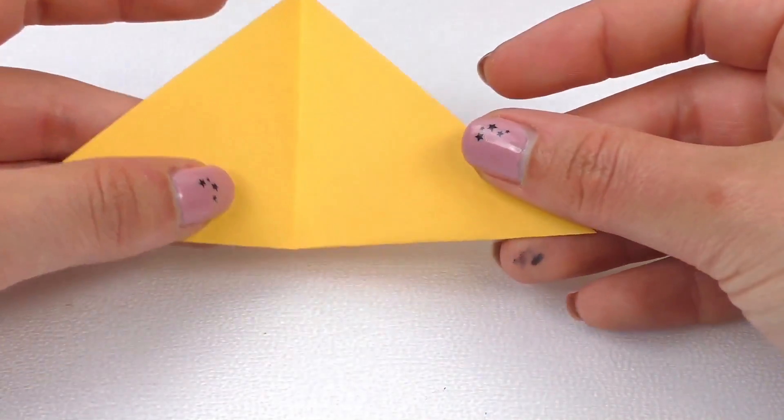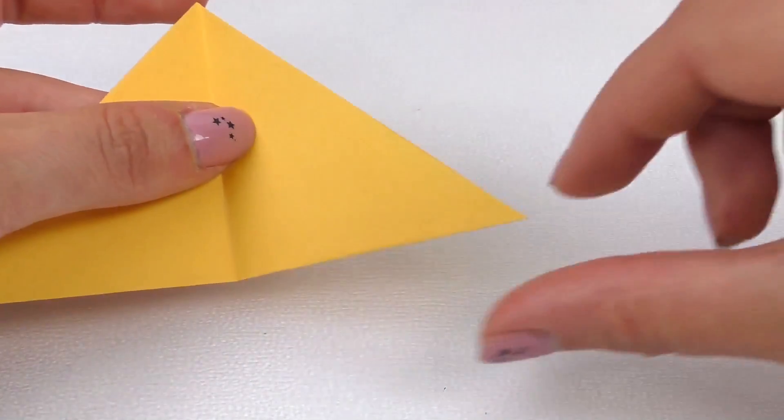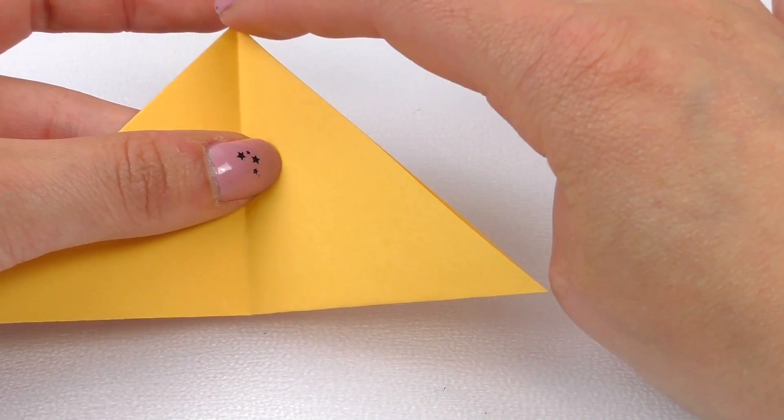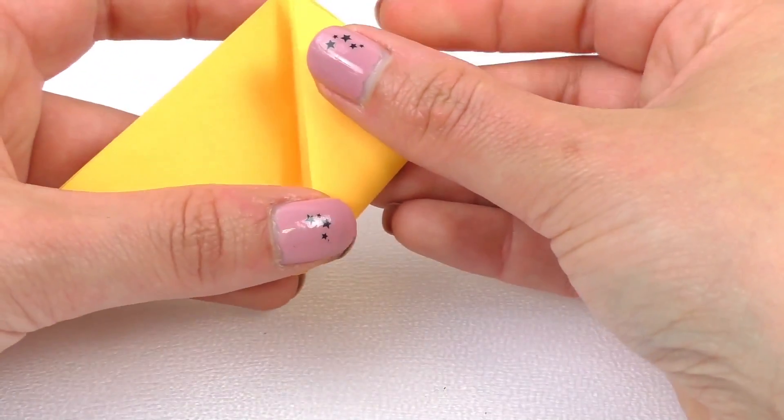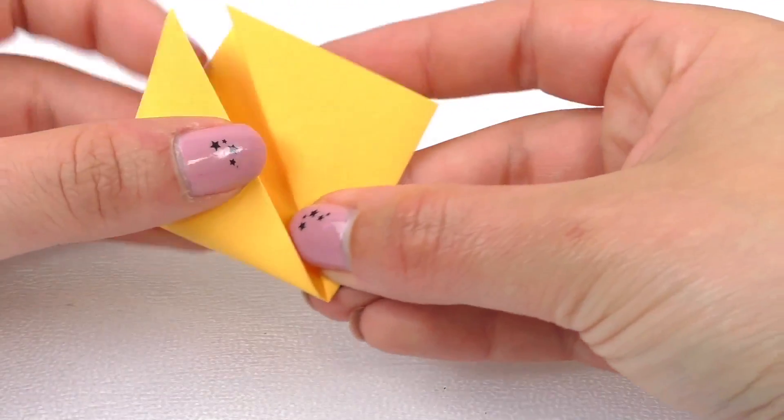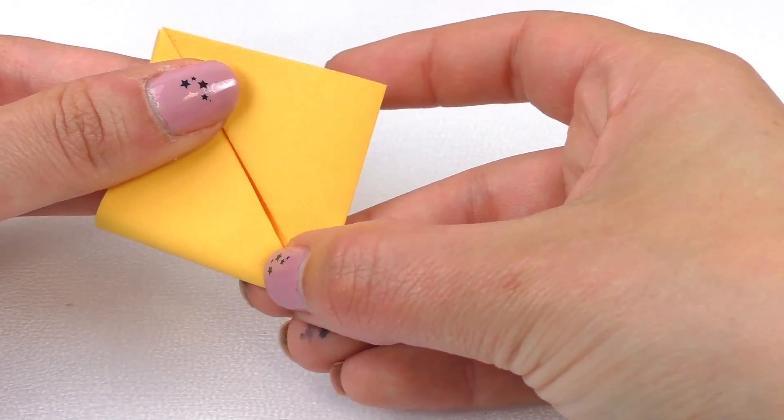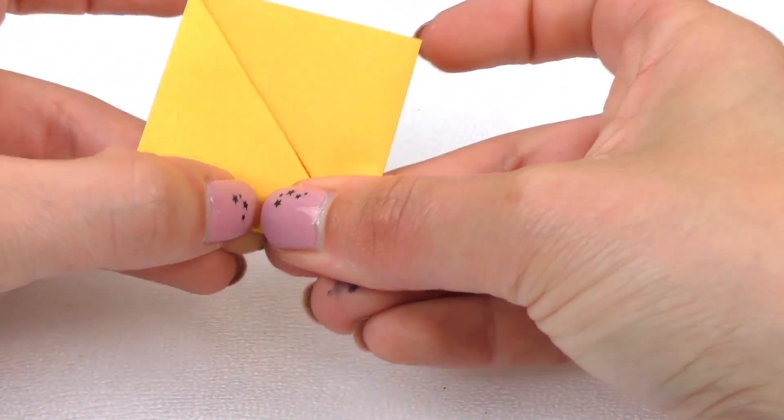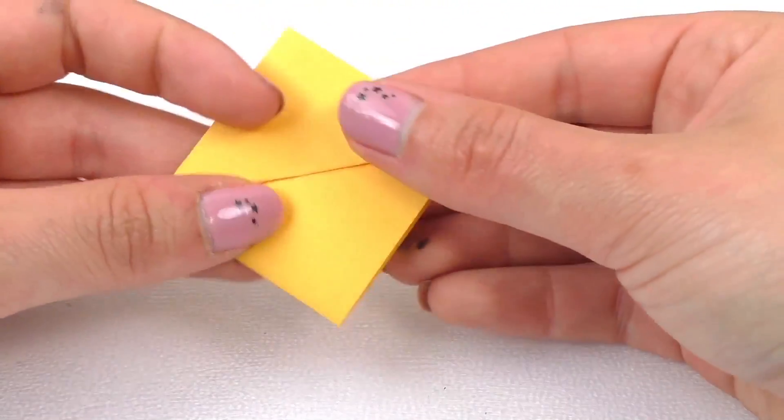Now we're going to open it. Then we'll bring the bottom right corner all the way to the top. Be sure to mark the fold really well. We'll do the same on the other side. Now we end up with a small square.